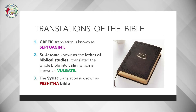Now we will see the translations of the Bible. The Greek translation of the Bible is known as the Septuagint. St. Jerome, known as the father of biblical studies, translated the whole Bible into Latin, which is known as the Vulgate. The Syriac translation is called the Peshitta Bible.